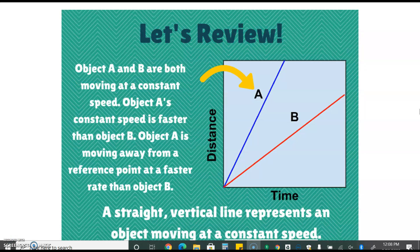There are a few things to review when looking at a distance time graph. One thing that you need to note is how to tell when an object is moving faster or slower. On this distance time graph we see objects A and B. They're both moving at a constant speed and we know that because both lines are straight. They don't curve at all. Object A's constant speed however is faster than object B. We know this because object A is moving away from a reference point at a faster rate than object B.